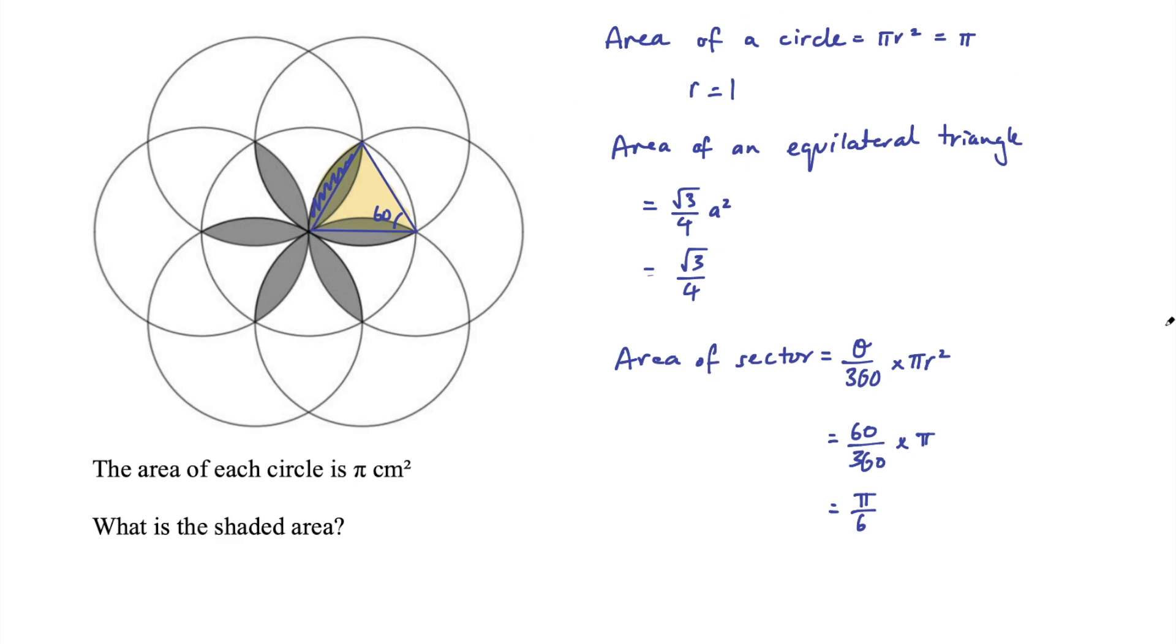which we call a segment. So the area of the segment is equal to the sector minus the equilateral triangle, which is π/6 - √3/4.